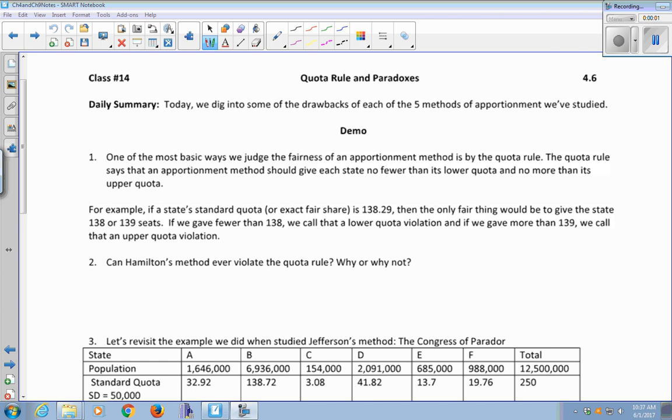We're going to dig into some of the drawbacks of each of the five methods of apportionment that we've studied. One of the most basic ways to judge the fairness of an apportionment method is by the quota rule. The quota rule says that an apportionment method should give each state no fewer than its lower quota and no more than its upper quota.